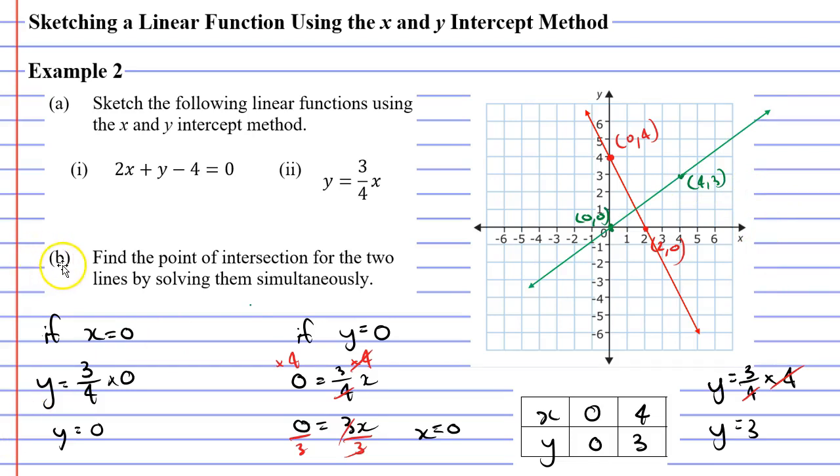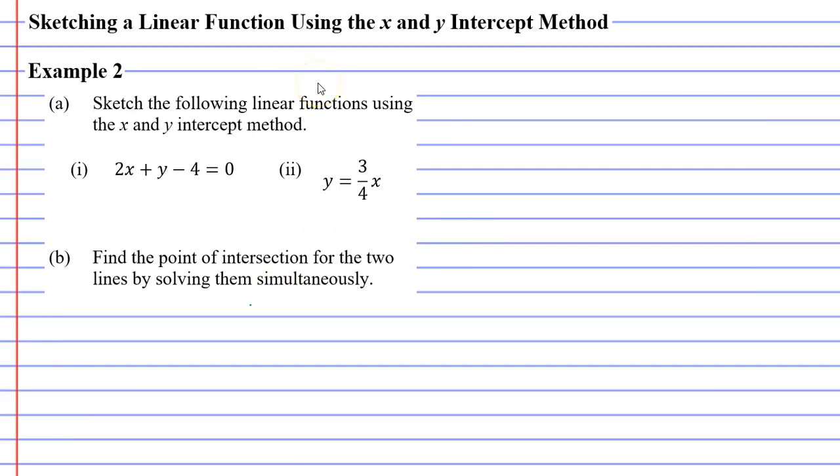We're now moving on to question b. We are asked to find the point of intersection for the two lines by solving them simultaneously. Some people like to find the point of intersection by looking at where the two lines intersect. They seem to intersect at the point where x is 1.5 and y is 1. When you do this by looking at a graph it's really only an approximation, so it's approximately (1.5, 1). If we want an exact solution we need to solve them simultaneously.